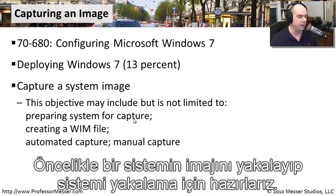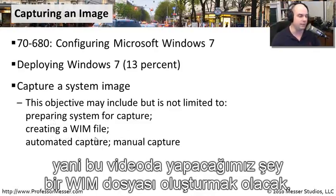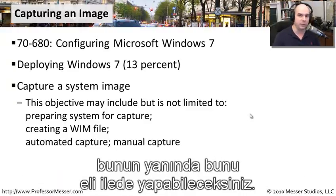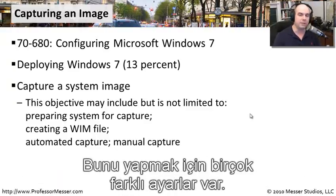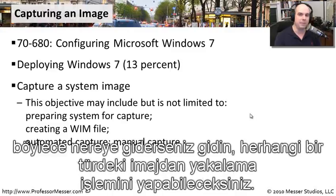We're going to prepare a system for capture, which is what we've already done. We're going to create a WIM file in this video and I'm going to show you how you can automate this capture - you can also do this manually. There are a lot of different options, but this will show you the fundamental methods you can use to capture any type of image wherever you might go.